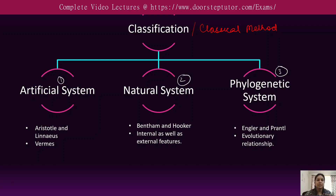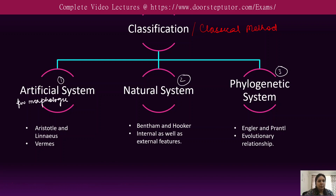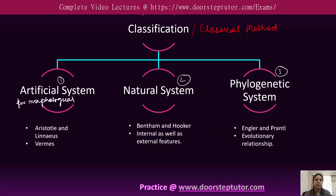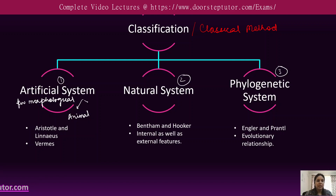The first classification was the artificial system. It was based on a few morphological observations — scholars at that time observed morphological features and classified organisms into two groups: animals, meaning all moving organisms, and plants, meaning all sessile organisms.